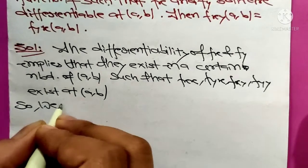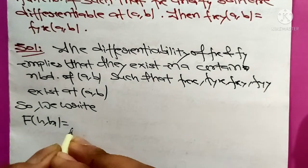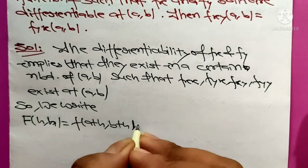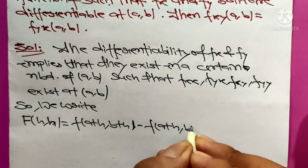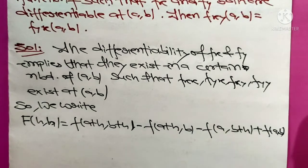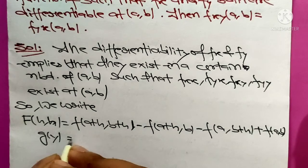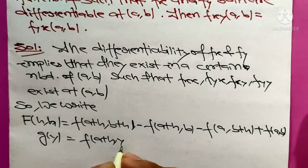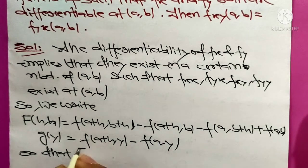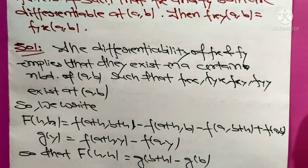So we write F(h,h) by the definition of differentiability as f(a+h, b+h) minus f(a+h, b) minus f(a, b+h) plus f(a,b). Now define a function g with one variable y: g(y) = f(a+h, y) minus f(a, y). So that F(h,h) equals g(b+h) minus g(b).